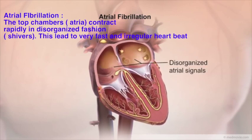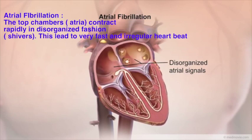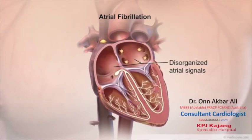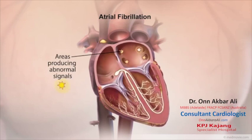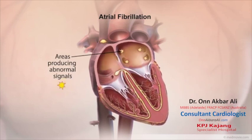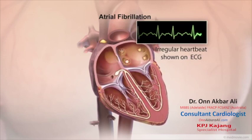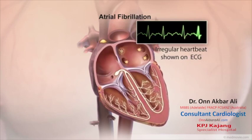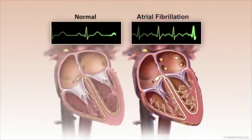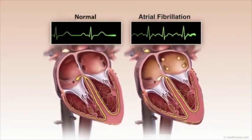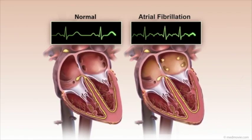In atrial fibrillation, disorganized electrical signals originate in the heart's upper chambers, or atria, causing the rhythm to be irregular. These signals come from small areas in the heart, represented here by stars. Irregular heartbeats can be seen on an electrocardiogram, or ECG. Because contractions are not coordinated as in the normal heartbeat, the heart does not pump blood effectively to the body.